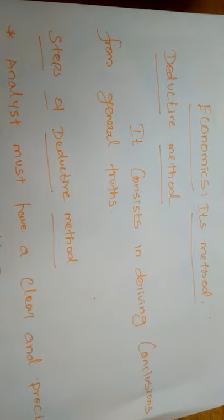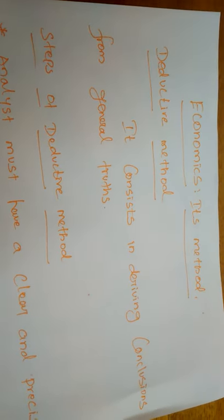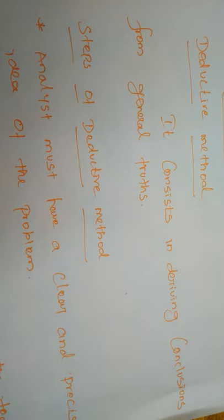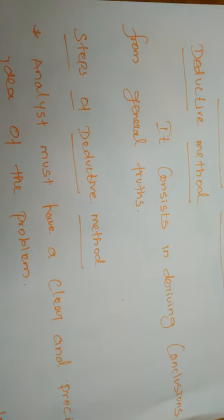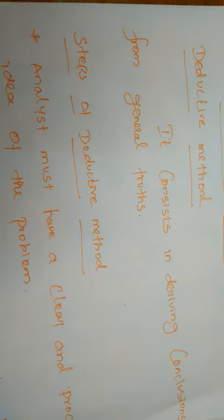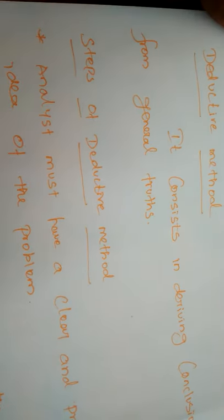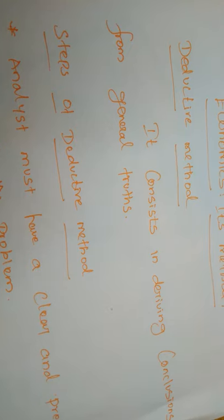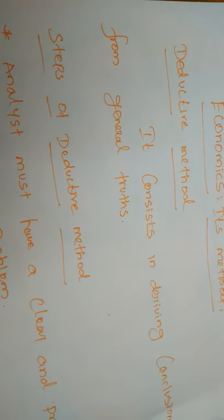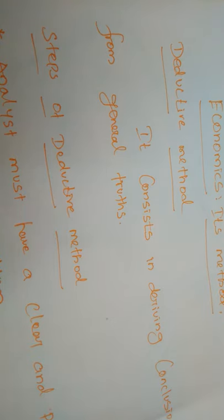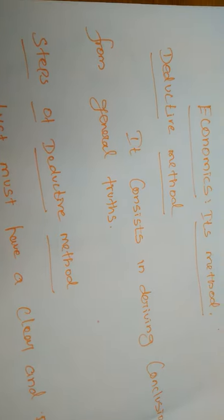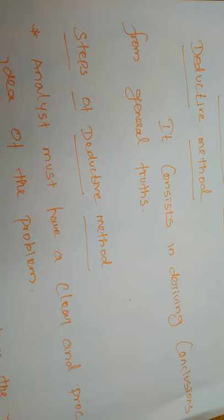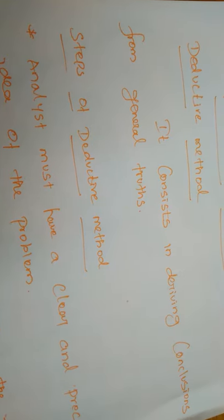For example, the law of demand. In this law, whenever the price of commodities increases, the demand will decrease. And whenever the demand increases, the price also will increase but the supply will decrease. So when the price increases first, the demand for commodities will be decreased — an inverse relationship.